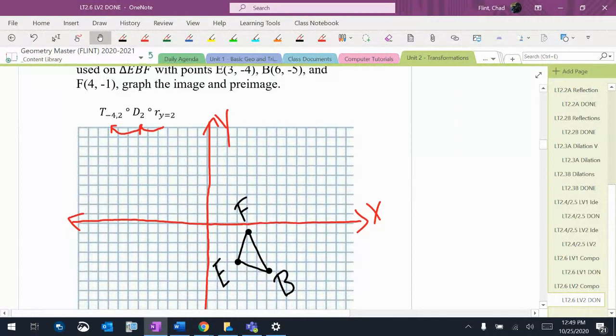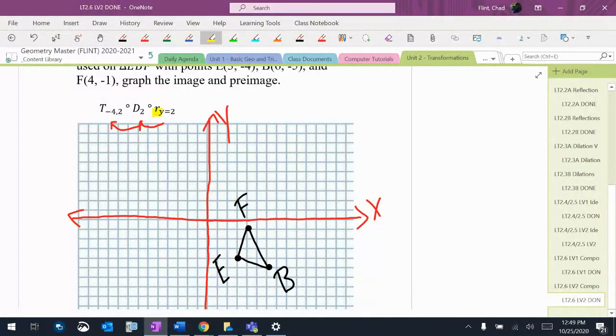So the first thing I want to do is the reflection over the line y equals 2. So I'll find the points where y is 2 and plot those on there.